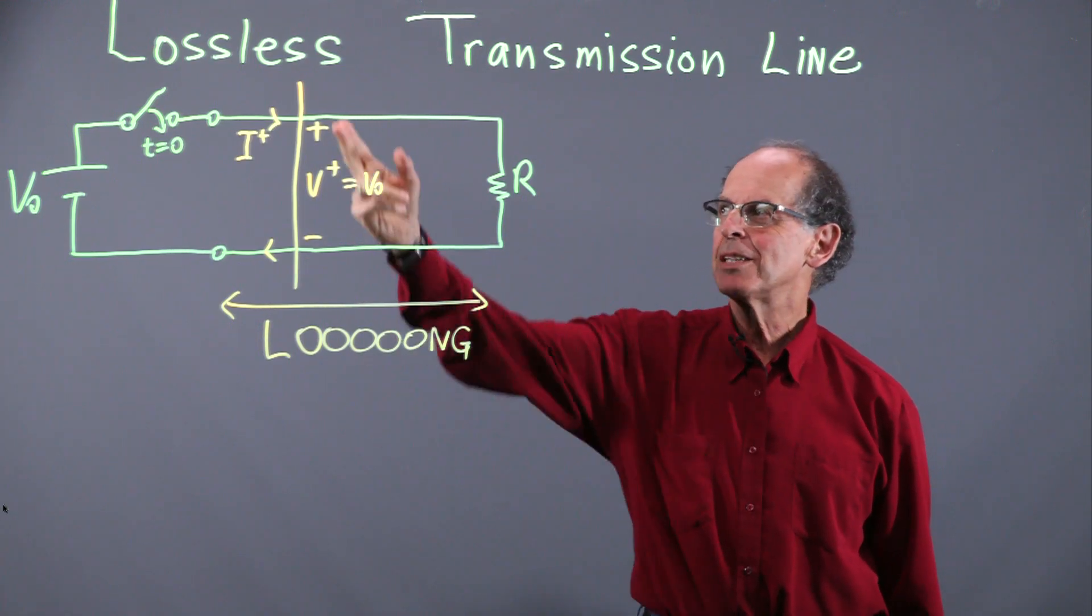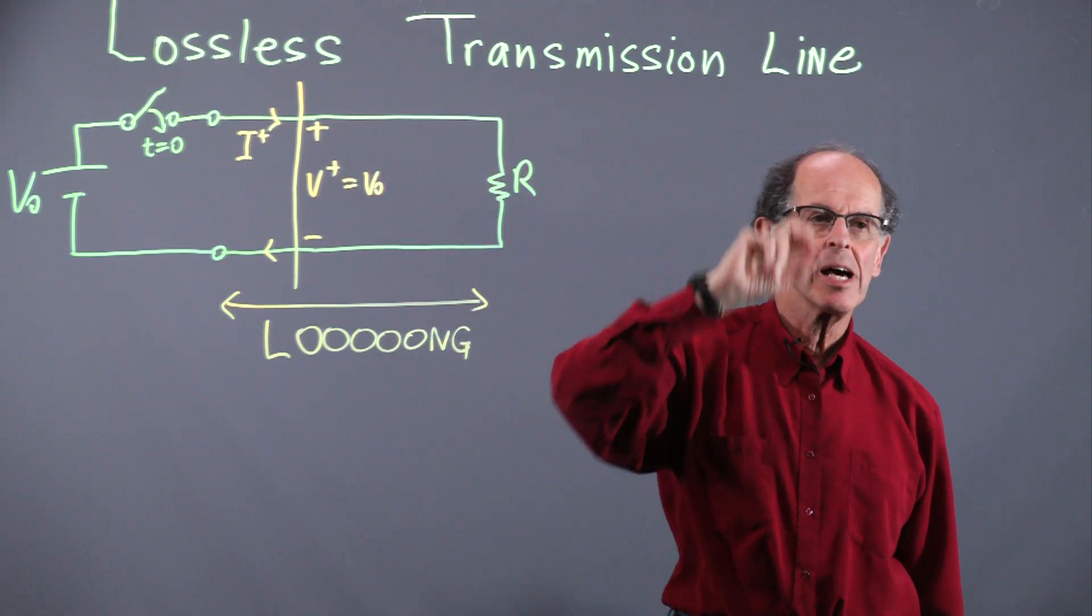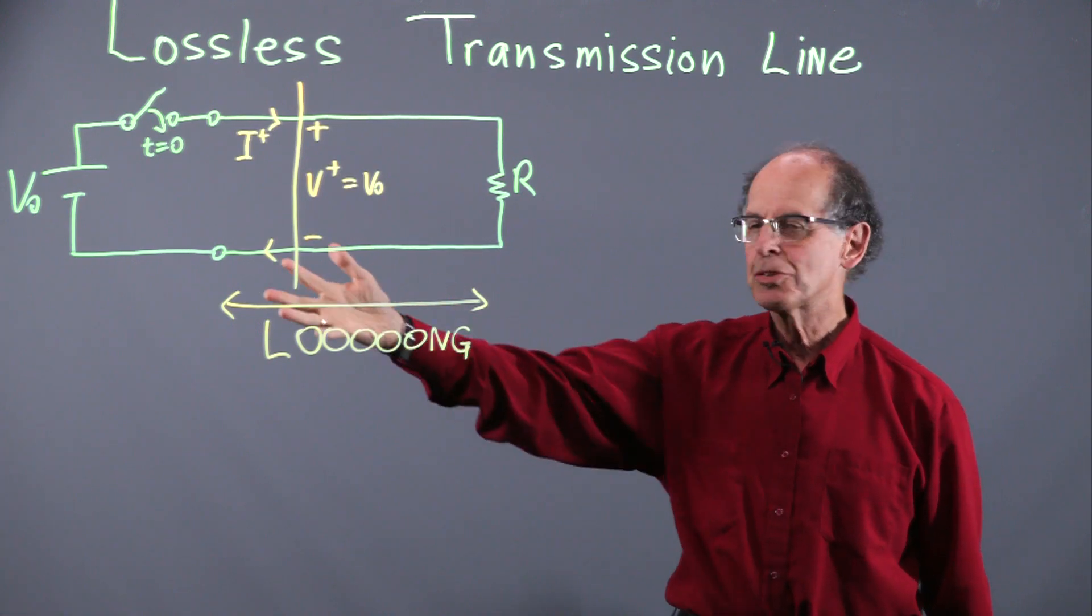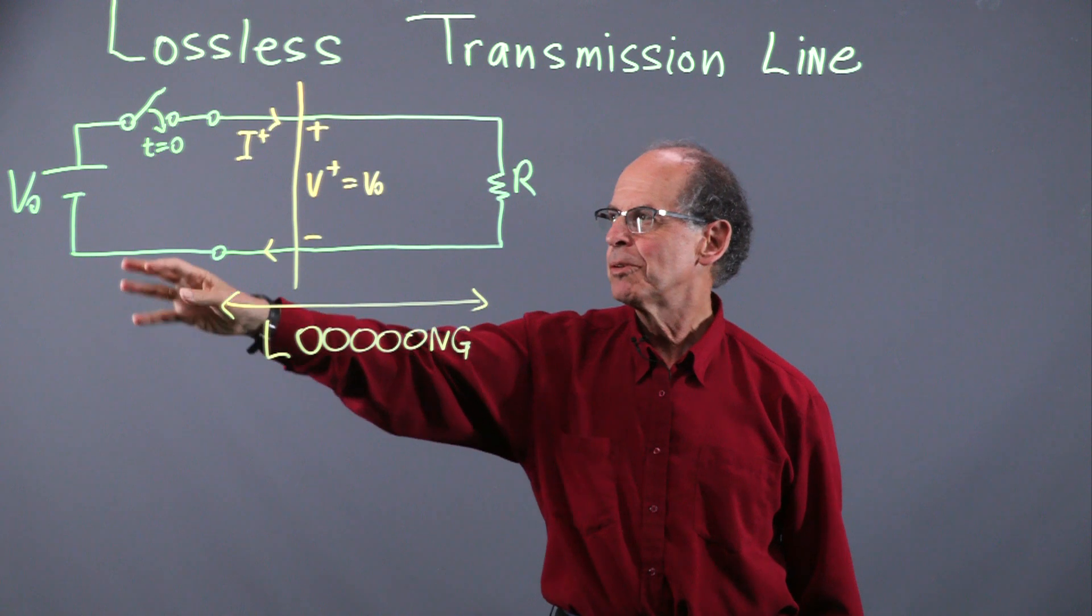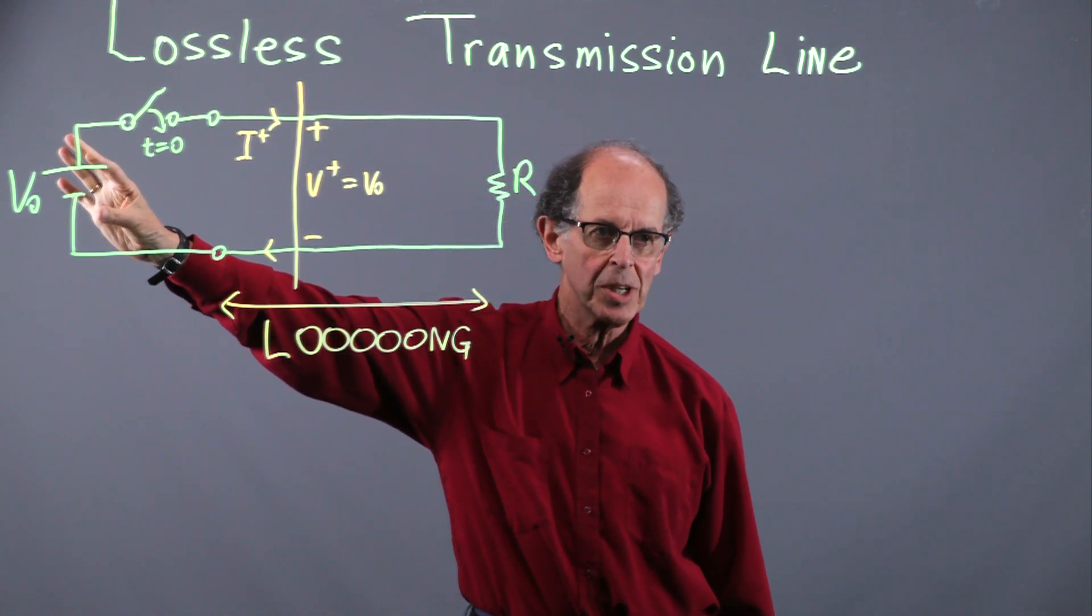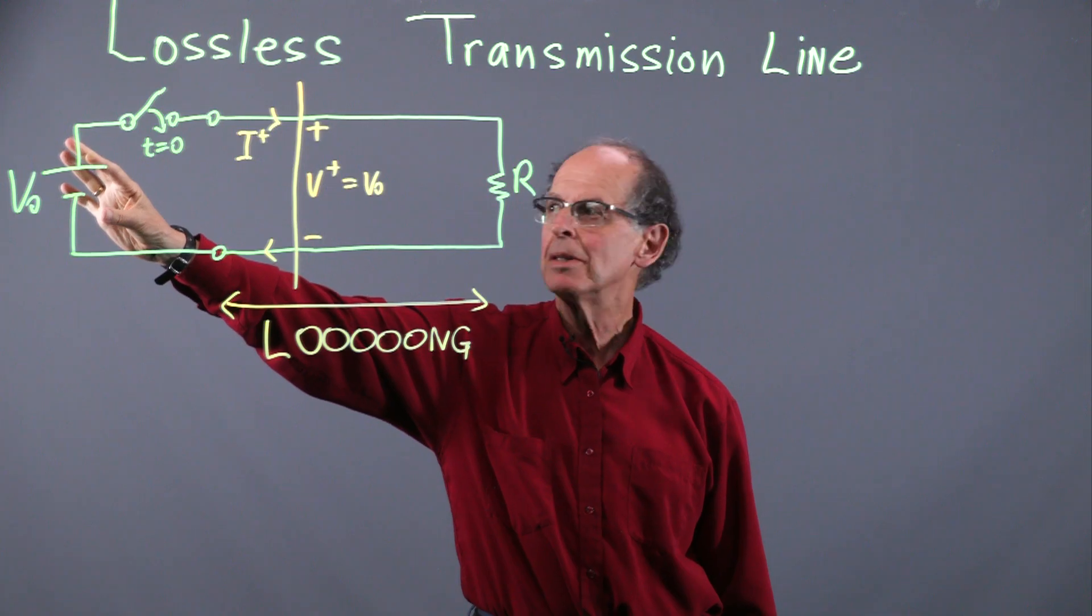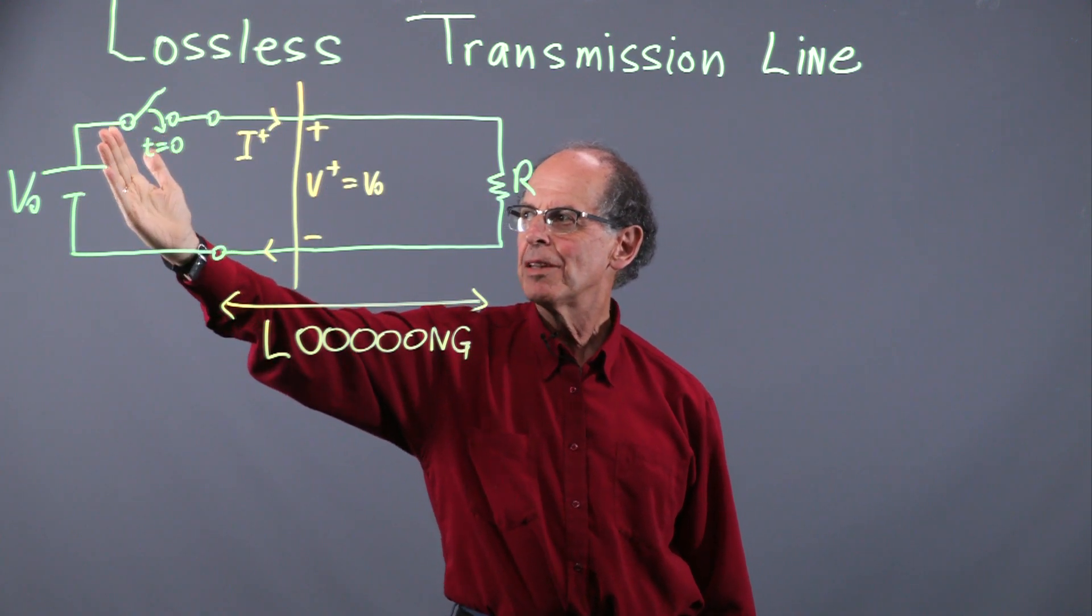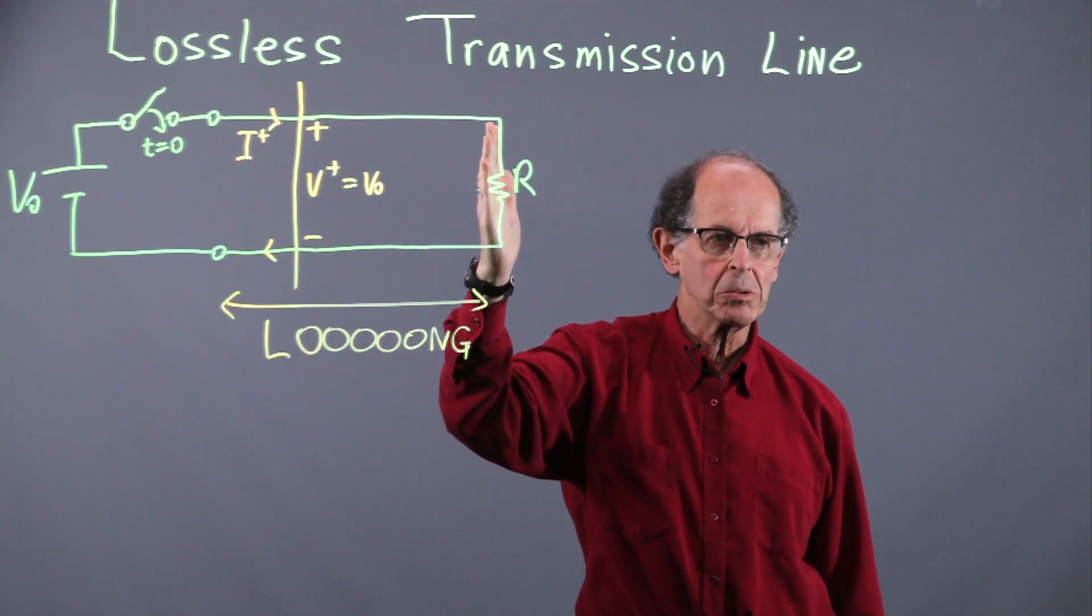Welcome to our discussion of a lossless transmission line model. The simplest transmission line is shown in this circuit. We have a voltage source V0, that's going to be in general a function of time, and we're going to close the switch and then the voltage is going to go down to a load.